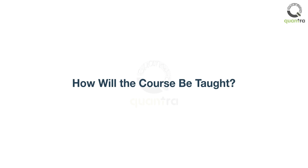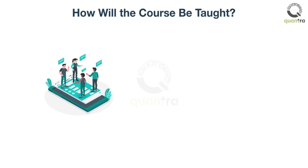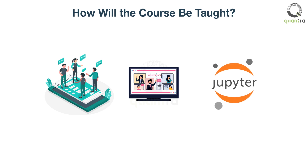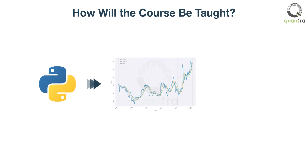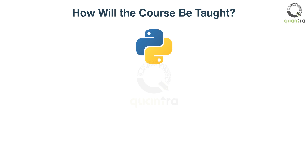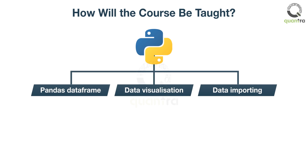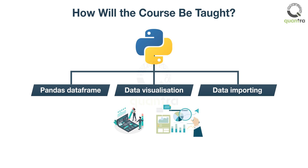How will the course be taught? You will learn all the topics in a detailed and simple manner through interactive exercises, animated videos, and Jupyter notebooks. We use Python to teach you a simple moving average crossover strategy and backtest it. If you are new to Python, you can refer to the Python basics section in the course to get familiar with Pandas DataFrames, data visualization, and data importing. This way you build skills to write your own strategies and backtest them.